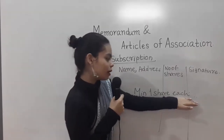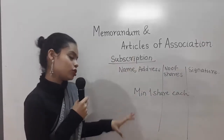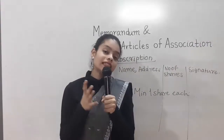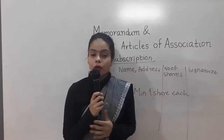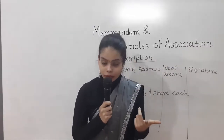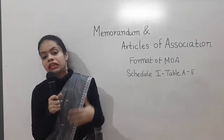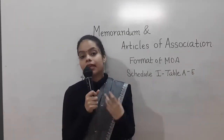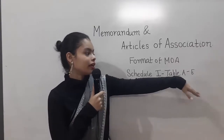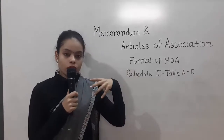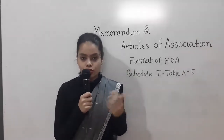We need a minimum of two members in case of a private company and a minimum of seven members in case of a public company. Every subscriber must hold a minimum of one share. In case of a one person company, apart from all of these things, the memorandum should also mention the name of the nominee. The format in which the MOA has to be drafted is given in Schedule 1 of Companies Act 2013, which gives different tables from Table A to Table E — different formats depending on the type of the company.